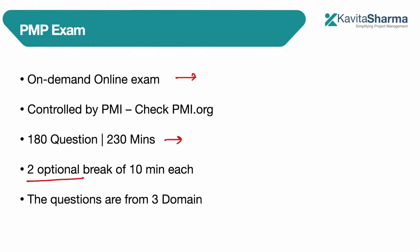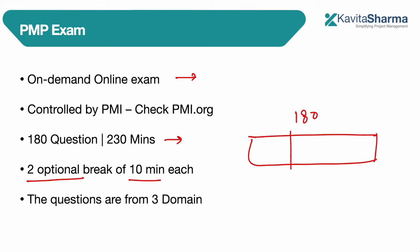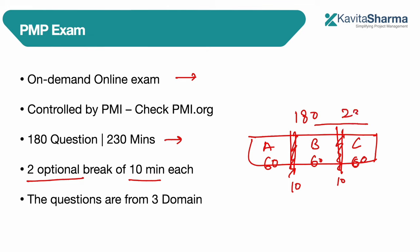There is an optional break of 10 minutes and you get two breaks. With 180 questions, there are three sections: Section A has 60 questions, B has 60, and C has 60 questions. After each section you get an optional 10-minute break. The total duration for answering questions is 230 minutes minus the 10 minutes of break.